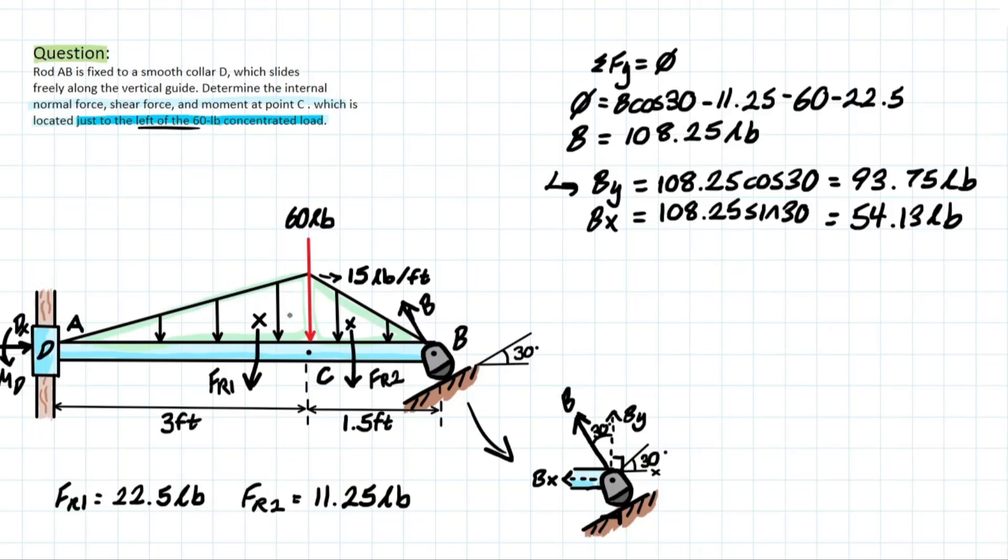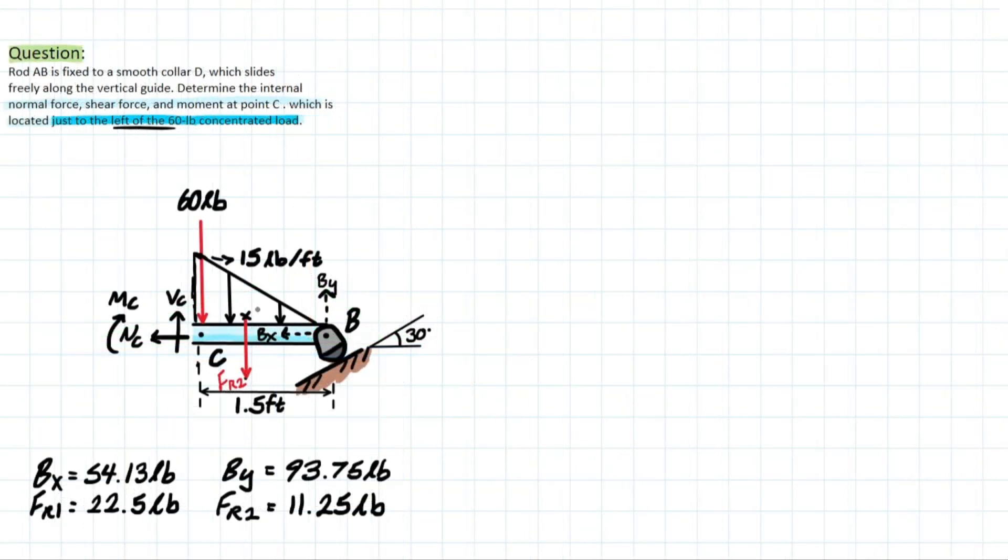So when we take this cut, we also have to remember that the 60 pound force is going to have to stay inside of the member that we analyze because we're taking just the left of that force. So let's take that cut and see what we're looking at. Okay, so now we have the cut made and it looks like there's a lot going on, but we've done a similar thing like this before and we'll quickly realize that it's not too tricky once we get into it.